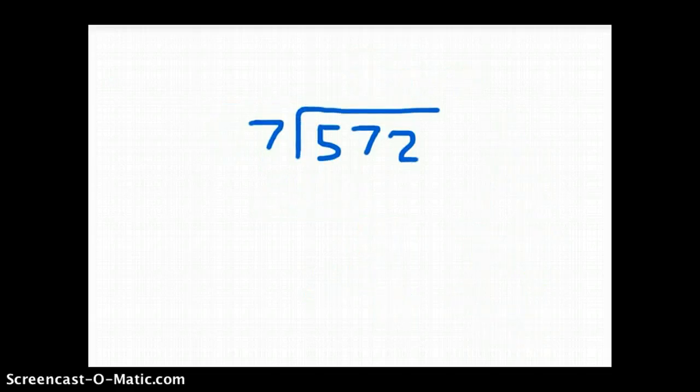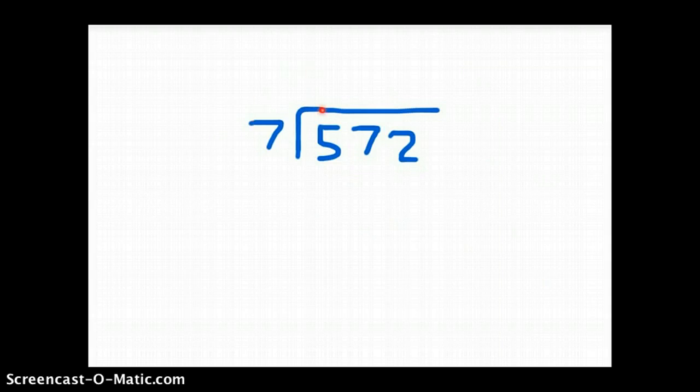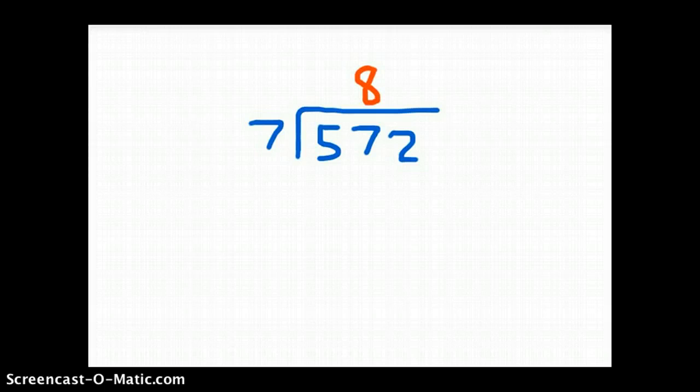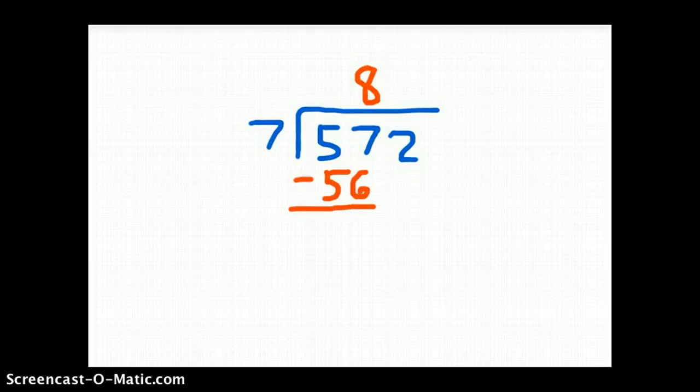So again, this is 572 divided by 7. 7 cannot go into 5. 7 can go into 57. 7 goes into 57, 8 whole times because 8 times 7 is 56. 57 minus 56 is 1. We bring down the 2.